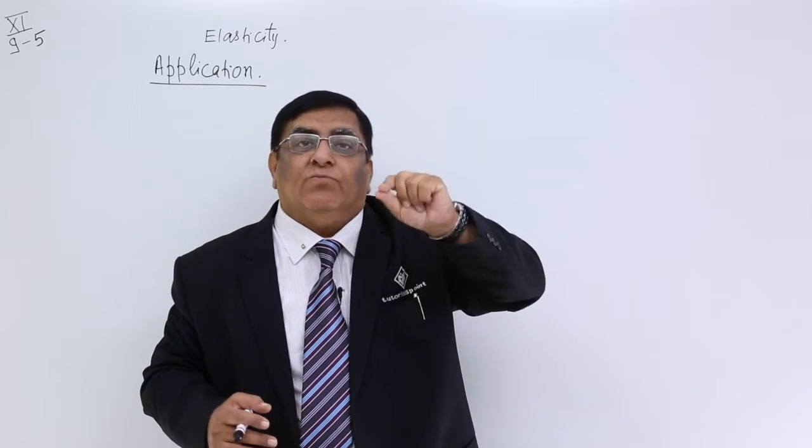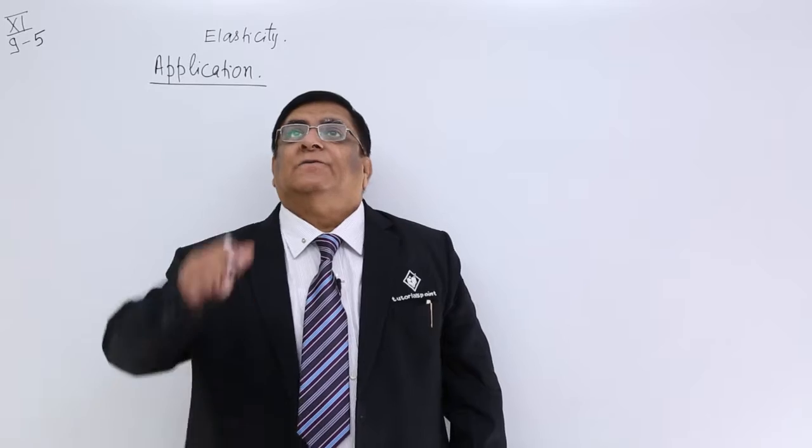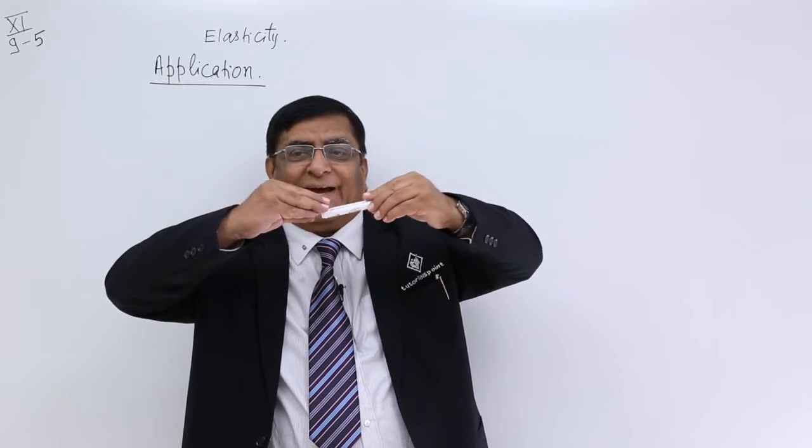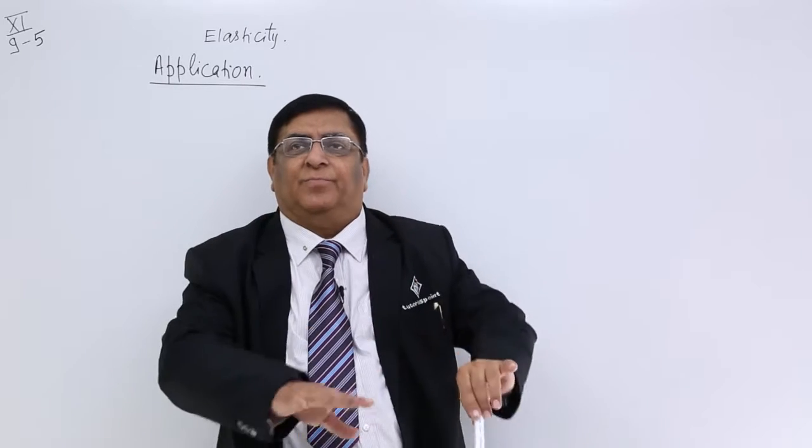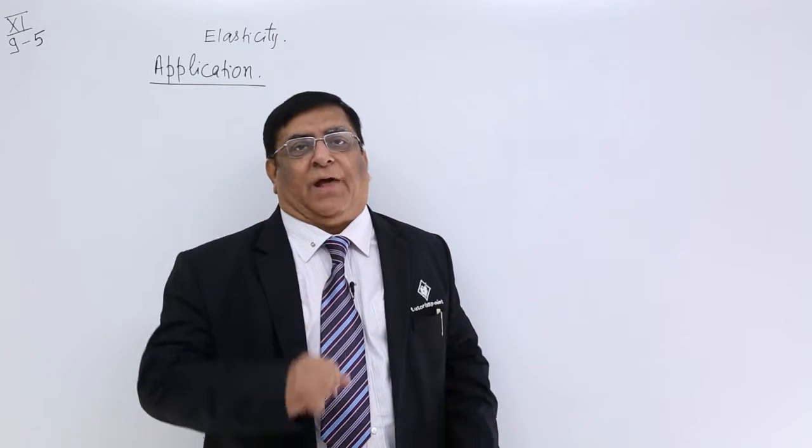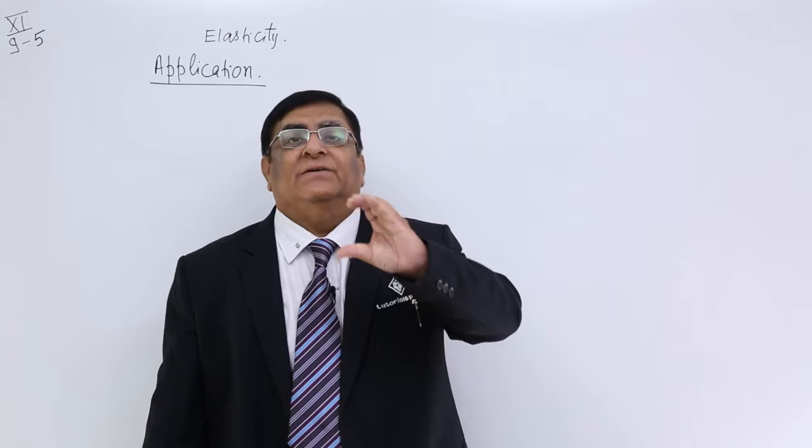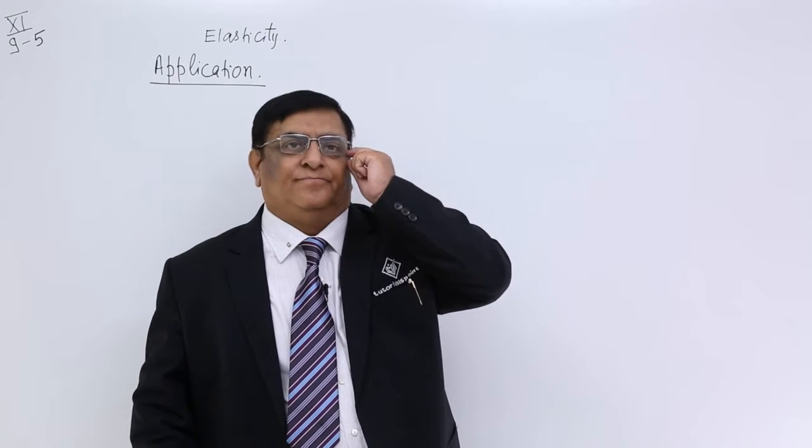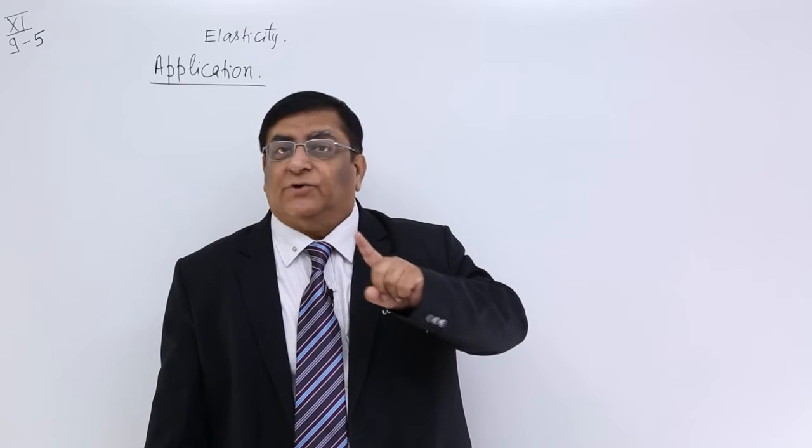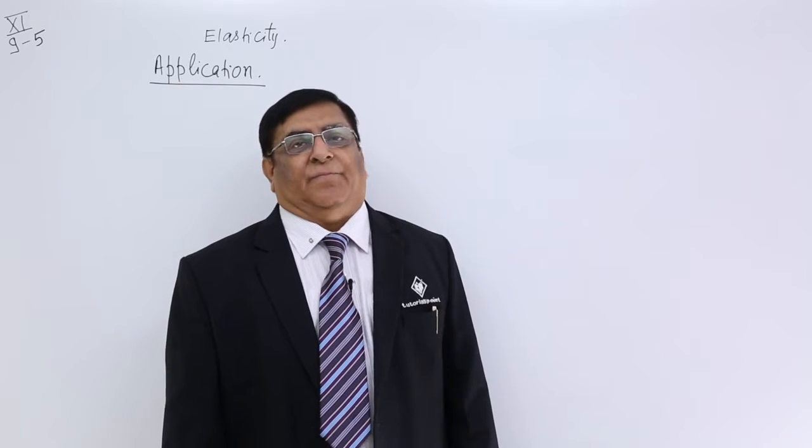Suppose that load is more than the yield limit, what will happen? This steel rod will go on under the load, will go on extending and will break. So we must know how much load we are applying and that should be within the yield limit. But that is not even good enough, not safe. We make it much less and that we call safety limit.